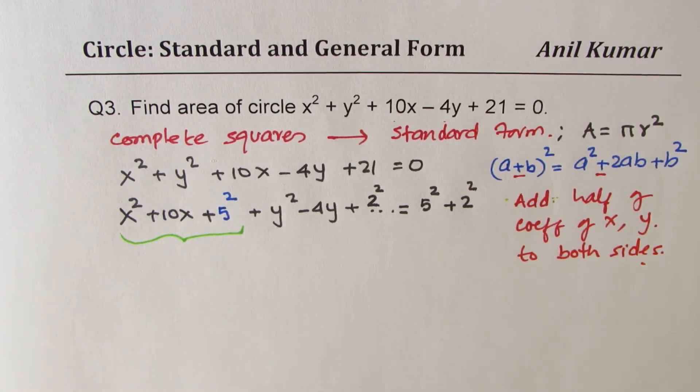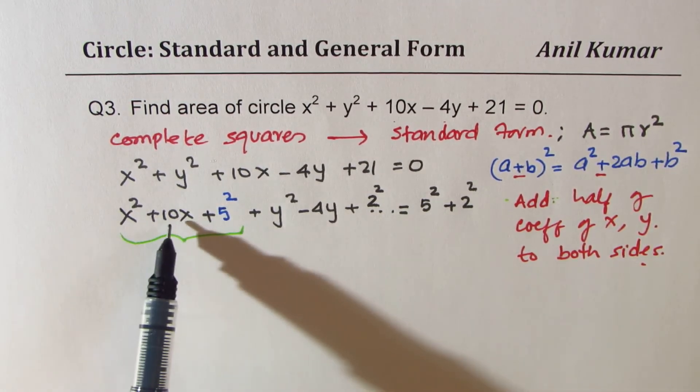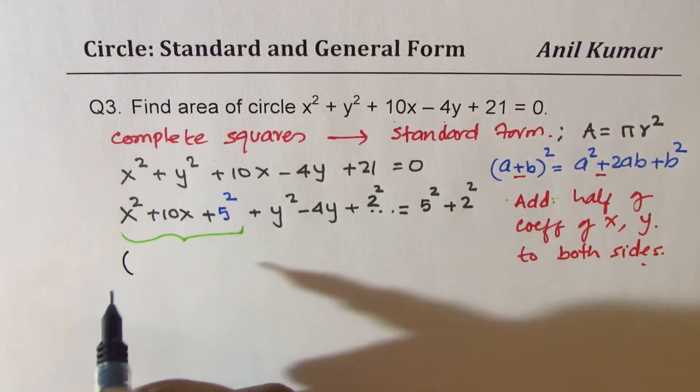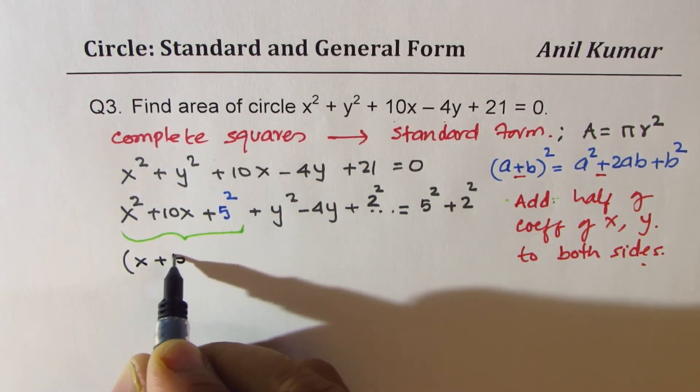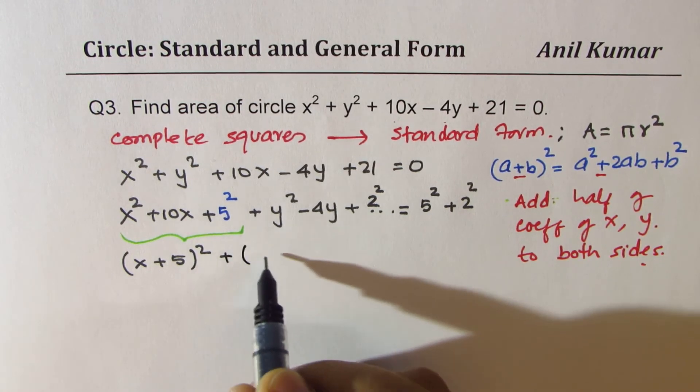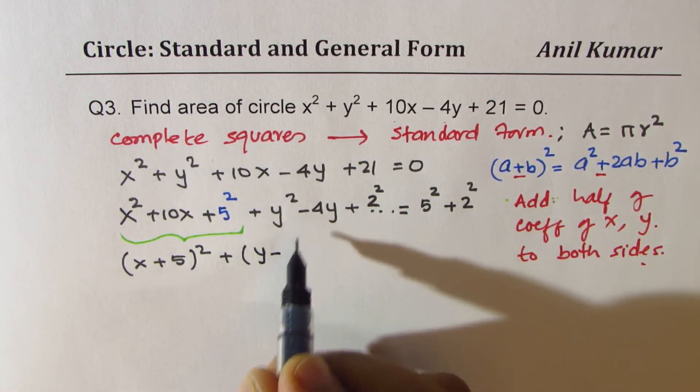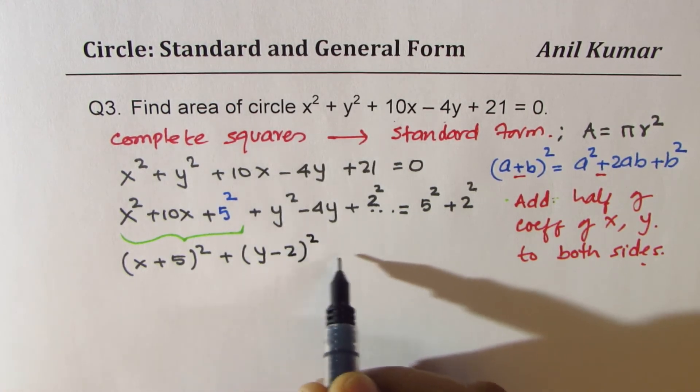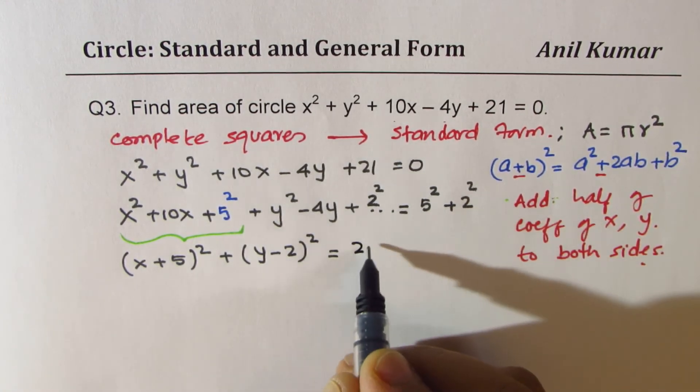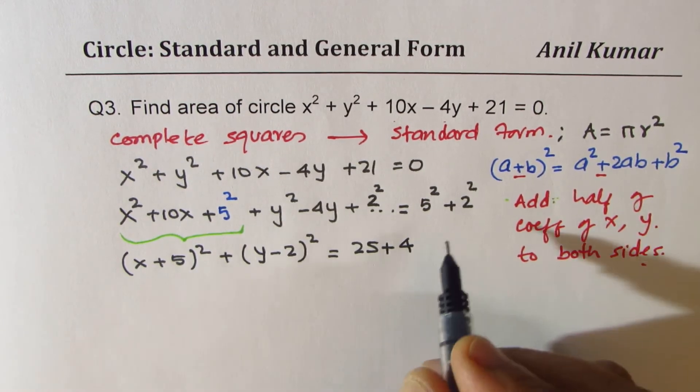This is a very important strategy. It's very similar to completing squares in quadratic equations to get the vertex. Now these three terms could now be written as (x + 5)². And these three terms can also be written as a perfect square. This time with negative sign, since this is negative: (y - 2)². On the right, we have 25 + 4, which is 29.